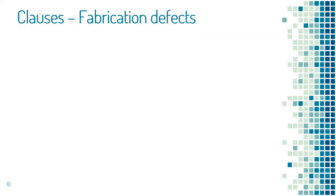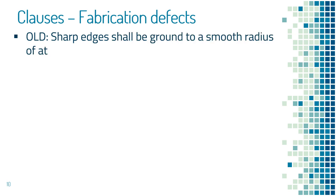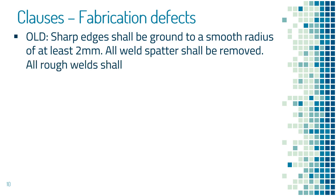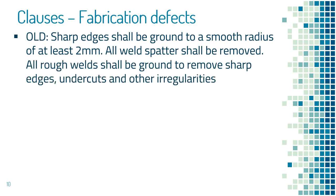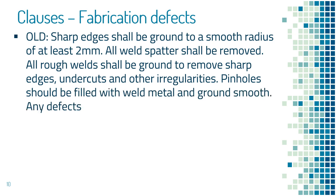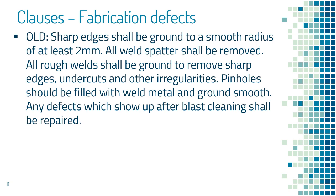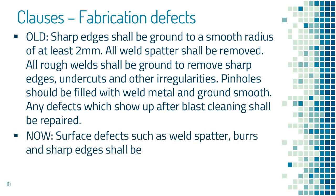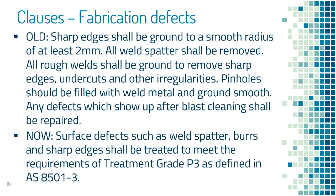The new standard makes the specifier's job easier. In the past, you needed to list the defects and their treatment and hope that you covered all possibilities. An old specification might have read: sharp edges shall be ground to a smooth radius of at least 2mm; all weld spatters shall be removed; all rough welds shall be ground to remove sharp edges, undercuts and other irregularities; pinholes shall be filled with weld metal and ground smooth; any defects which show up after blast cleaning shall be repaired. With the new standard, making such treatment mandatory is simply achieved by referring to the standard and noting the required treatment grade — such as: surface defects such as weld spatter, burrs and sharp edges shall be treated to meet the requirements of treatment grade P3 as defined in AS 8501-3.